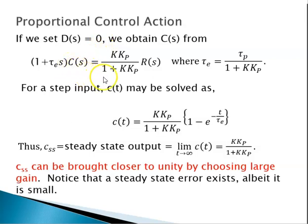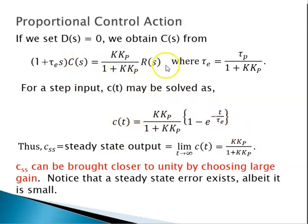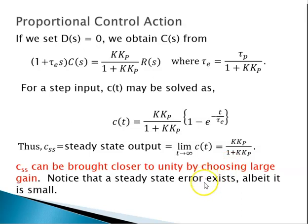If we set aside the disturbance by setting it to zero, we get a relation between input and output. For a step input, the output may be calculated by solving the differential equation, and we see that the steady-state output for a step input is K*K_p over (1 + K*K_p), which is not 1. You can bring it very close to 1 but theoretically there is a steady-state error to a step input — that is one downside of the proportional controller.